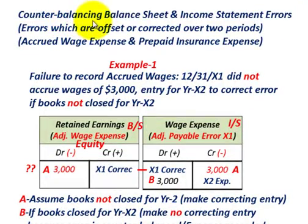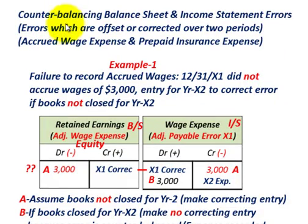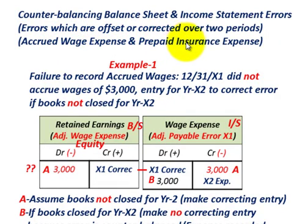What we're going to be going over here are counterbalancing balance sheet and income statement errors — errors which are offset or corrected over two periods. We're going to be looking at counterbalancing errors that have to do with expense items: our accrued wage expense for one example, and our prepaid insurance expense for the other.